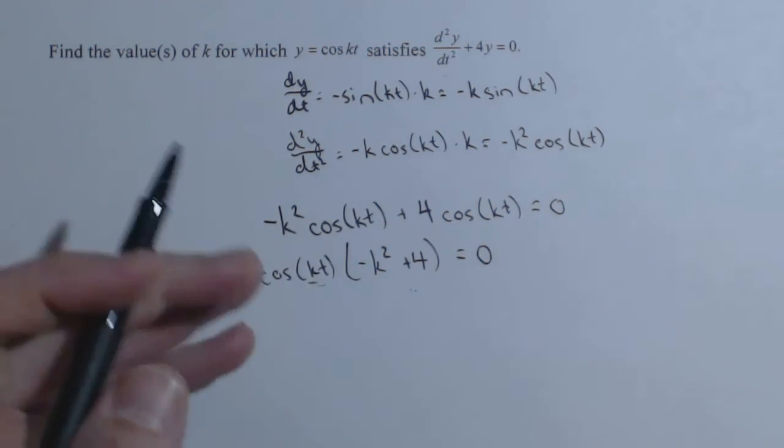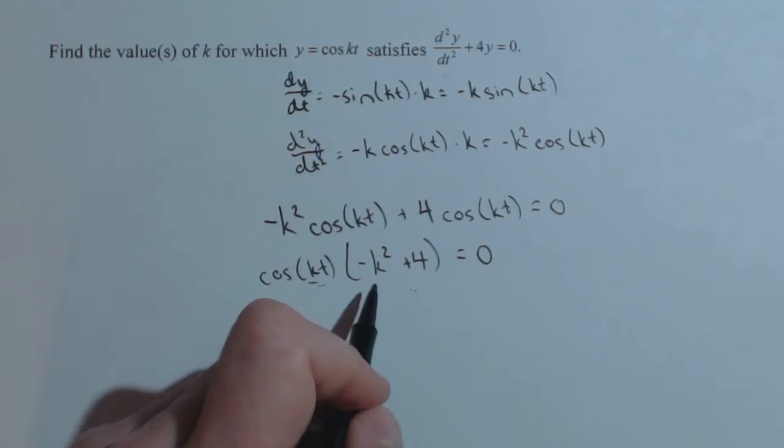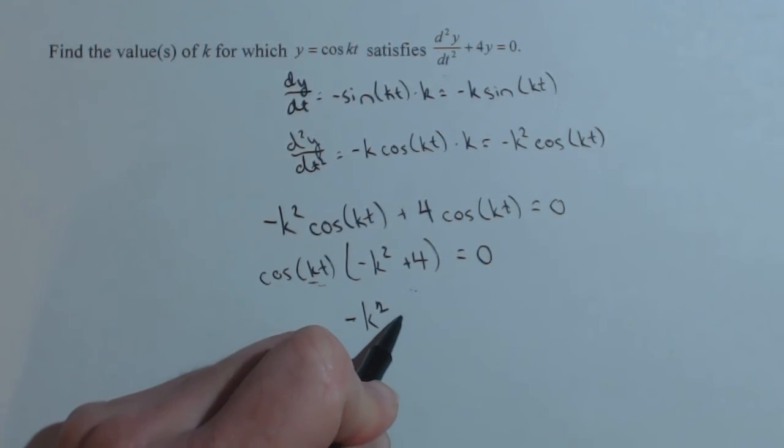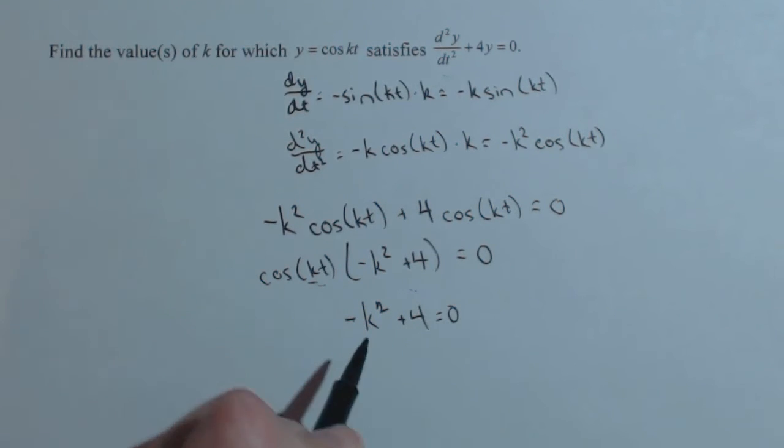This would be dependent on t still. So we get negative k squared plus 4 equals 0. So k squared equals 4, square root both sides. We get k equals plus or minus 2. And there are two values of k.